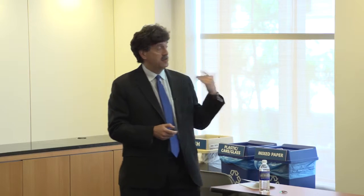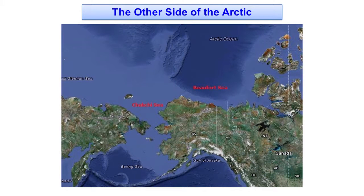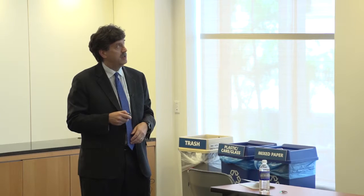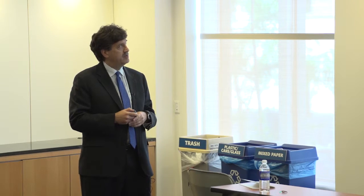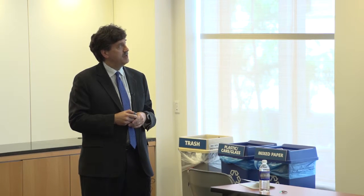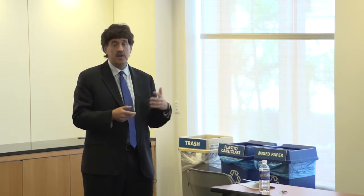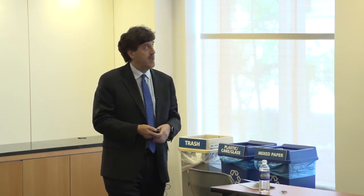On the flip side of the Arctic, close to the United States — here we have Alaska — and the far east of Russia, there is virtually no fishing of a commercial nature north of the Bering Strait. Very limited subsistence fisheries, and there's no international mechanism for managing fisheries there.